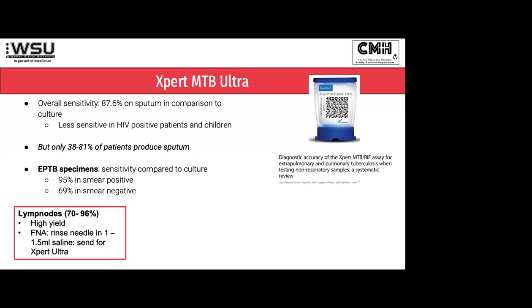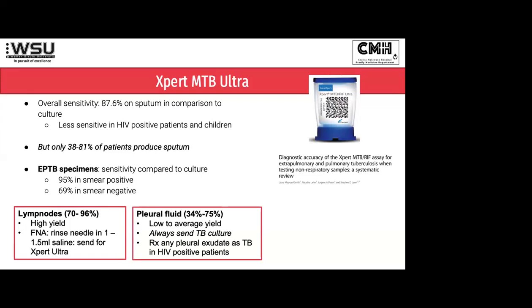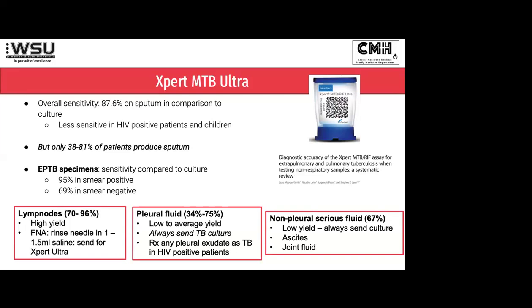One of our high-yield samples is lymph nodes. When you do an FNA, after you've made your slides, rinse your syringe in 1 to 1.5 mls of saline, put it in a normal sputum bottle, and you can send that for GeneXpert. That's much more effective than what you'll get from the slide alone - an important way to get a sample if you can't get a sputum. Always remember to send pleural fluids for GeneXpert, though the yield is not as good - please also send a TB culture. For ascites and joint fluids, the GeneXpert is not so great, so it's very important to send cultures on those as well.